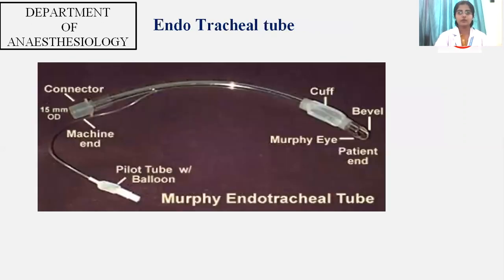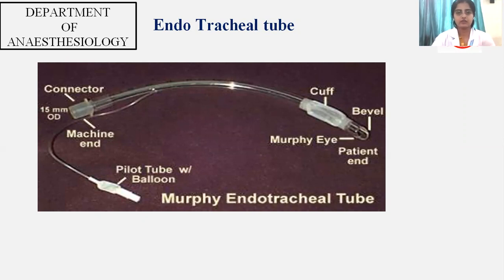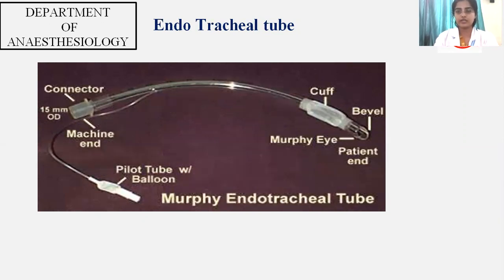What are the parts of an endotracheal tube? You have a connector, a pilot balloon with an inflating valve, a machine end, and a patient end. At the patient end, there is a Murphy's eye located on the lateral wall, a beveled tip, and a cuff.